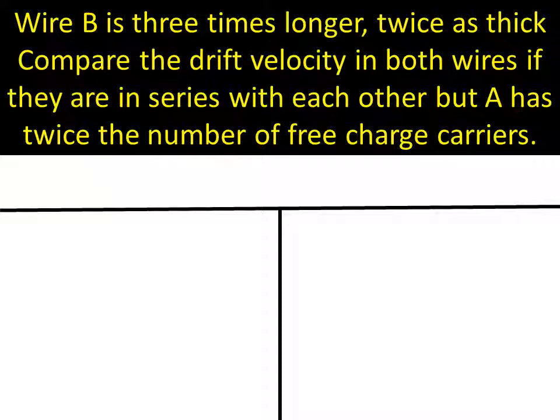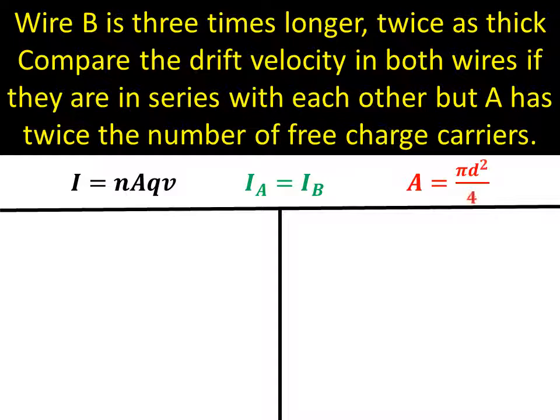First of all, we need to identify what formulas we're going to start with. Well, we only know one formula with drift velocity. And it's this one here. So it's I equals nAqv, where n is the charge carrier density, so the number of charge carriers per meter cubed. A is the cross-sectional area. Q is the charge per carrier. And v is the drift velocity.